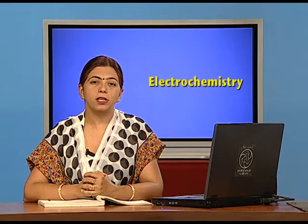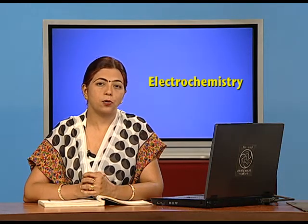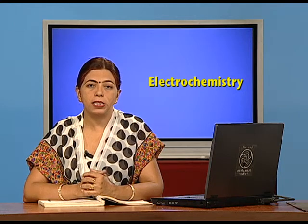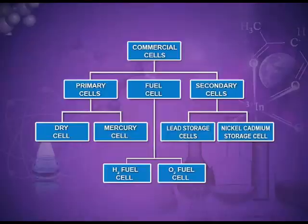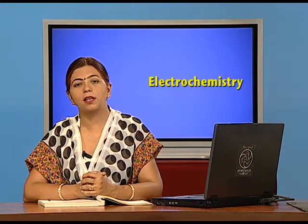The next application of electrochemical phenomena is cells and batteries, which we use in day-to-day life — a dry cell in a transistor or torch, a mercury cell in wristwatches or hearing aids. A battery is a combination of two or more galvanic cells in series. These commercial cells are classified as primary cells, and there is also a category known as fuel cells, which we will study later.